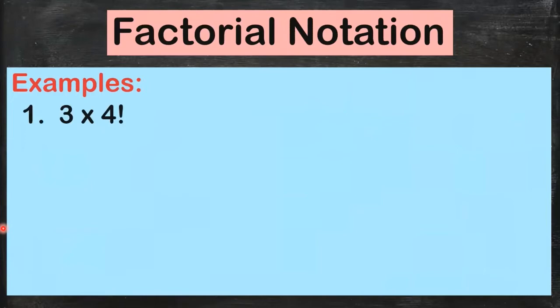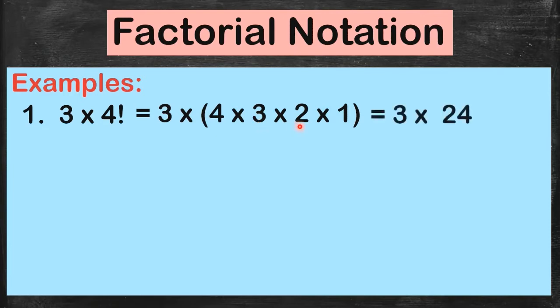First example. If you take a look at this example, walang factorial itong three. Ito lang four ang may factorial. So you're going to have 3 times 4 factorial. You just copy three, and then yung four factorial, ito yung isusulat mo in terms of consecutive decreasing positive integers. That's why we have 4 times 3 times 2 times 1. You're going to have 4 times 3, you get 12, 12 times 2 you get 24, and 3 times 24 is 72.